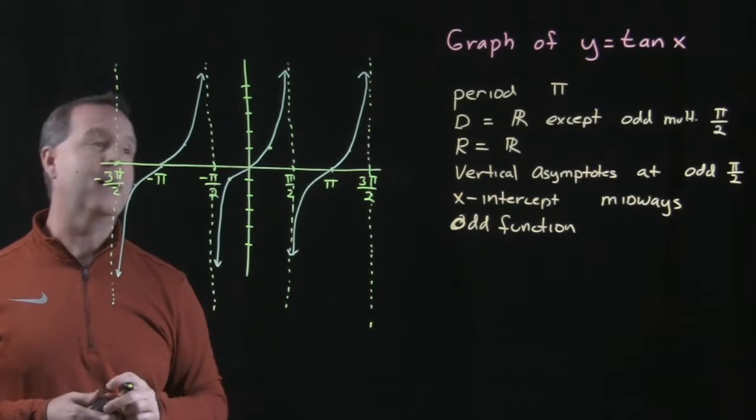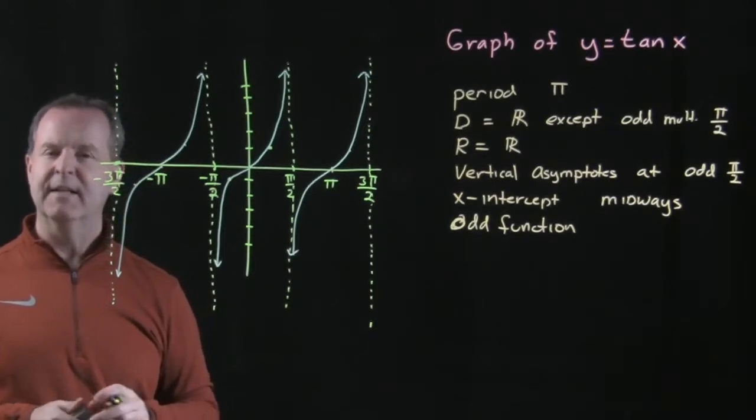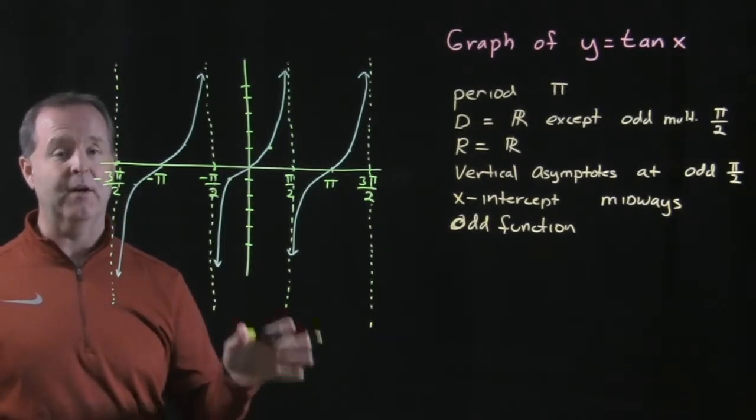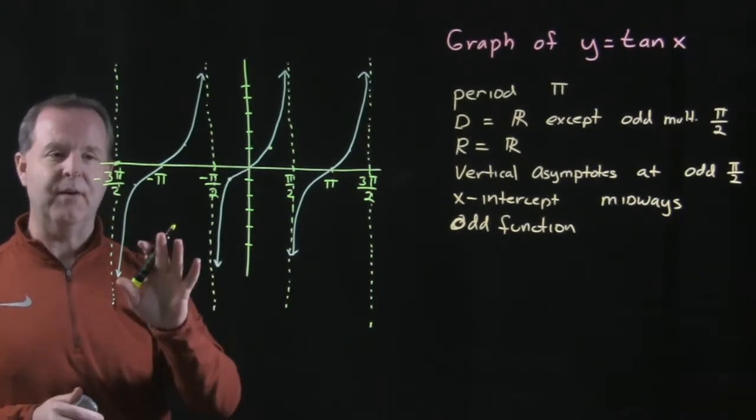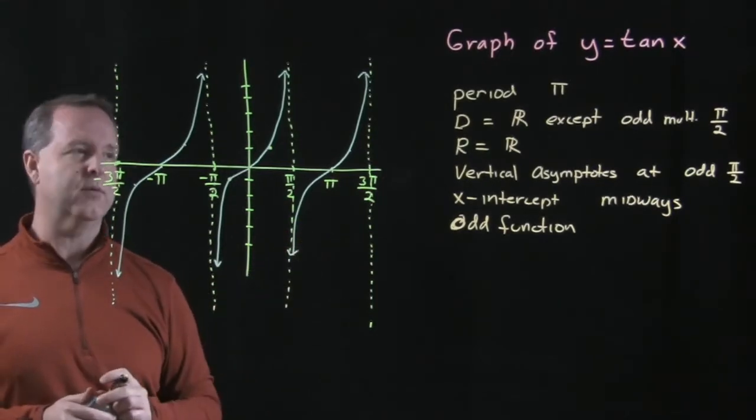We want to explore now the graphs of tangent of x. Now, this graph is a lot different than our sine and cosine graph. It's not sinusoidal. Rather, it's a repetitive pattern that we'll see.